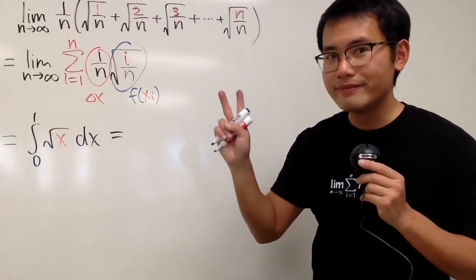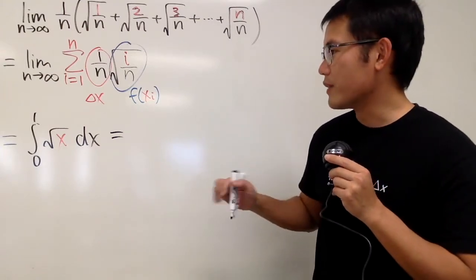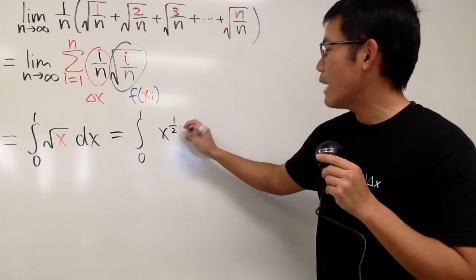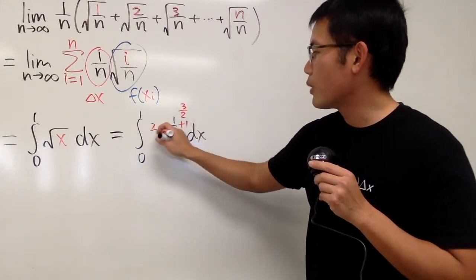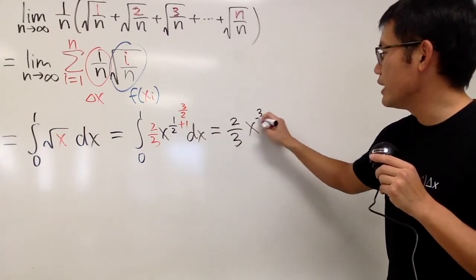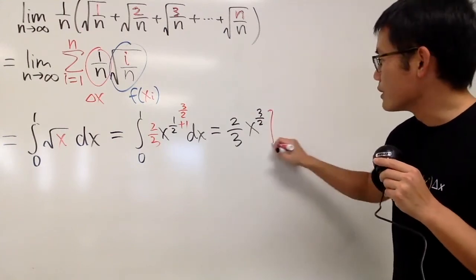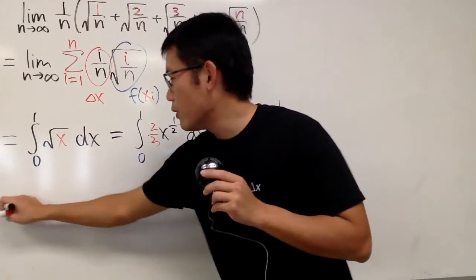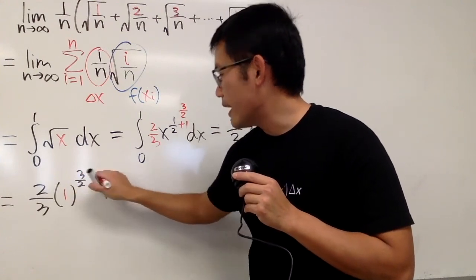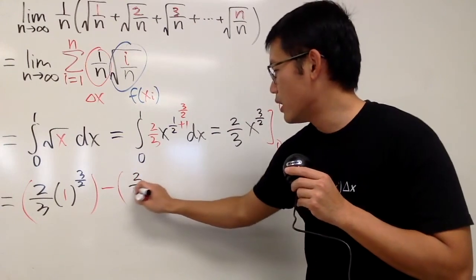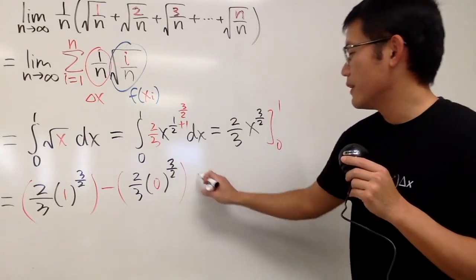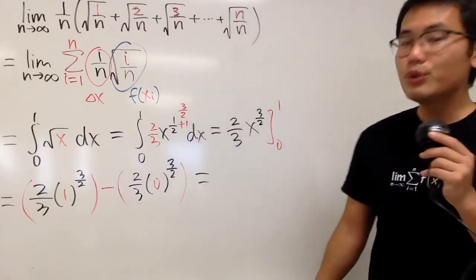Now we can finish this using the fundamental theorem of calculus, part 2. Go ahead and find the antiderivative — rewrite square root of x as x to the 1/2 power, from 0 to 1. Add 1 to the power, which gives us 3/2, divided by the new power, which is 2/3. So we get the antiderivative being 2/3 x to the 3/2 power. Plug in 1 and plug in 0: 2/3 times 1 to the 3/2, minus 2/3 times 0 to the 3/2. The second part is 0, so the answer is 2/3.